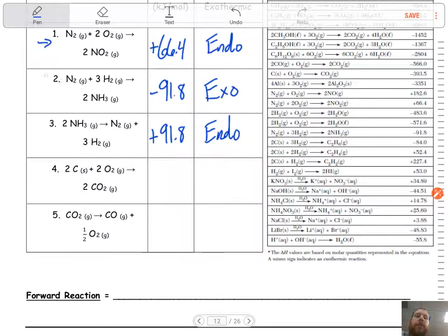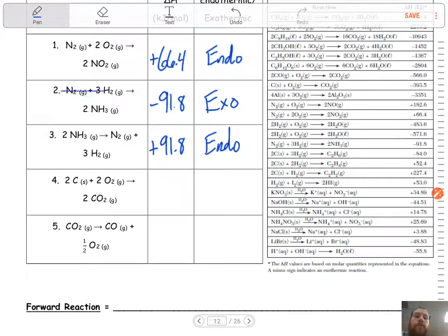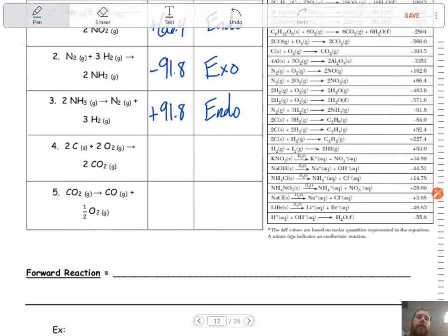Now, if we wanted to go backwards, so naturally reaction number two wants to happen because, hey, N2 plus 3H2, we're making this. And we'll talk about why that is later on in terms of spontaneity. Here, number three doesn't want to happen. So we have to add that energy to get the reaction to go.